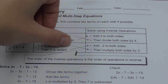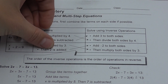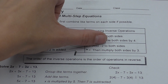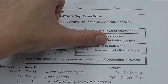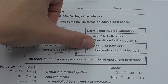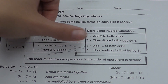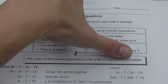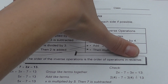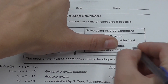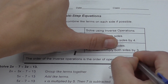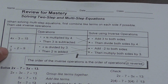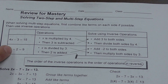The first thing I'm going to take is the last item on the list — 2 is added — and I'm going to subtract 2 from both sides. Then multiply both sides by 3. The order of inverse operations is the order of operations in reverse, and that 'in reverse' is a really important part. You can't deal with this divided by 3 while there's still a plus 2 over here.